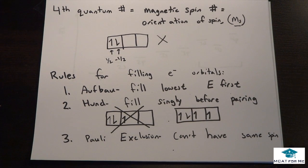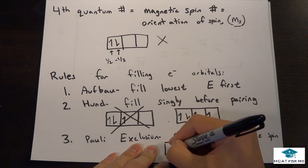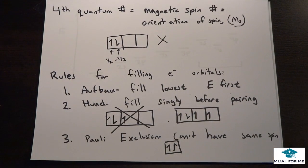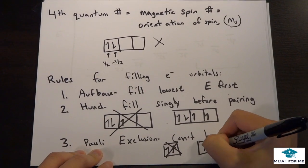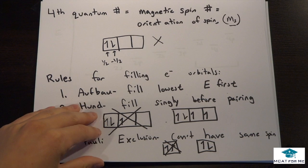And so the Pauli exclusion principle is that they can't have the same spin. So like this would be correct. But say we had both of them as going up. So say they both are positive one half, that is not allowed. They have to be opposite in spin if we're going to pair them up like that.